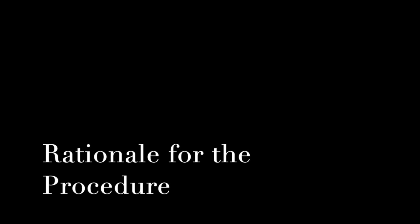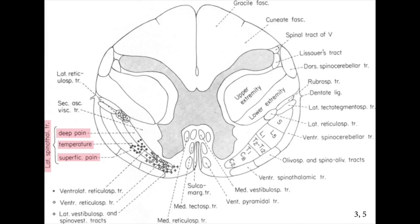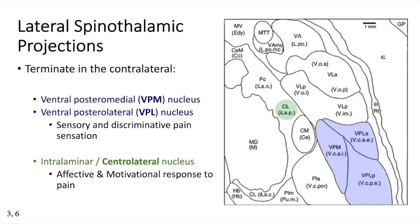The spinothalamic tract transmits nociceptive signals, temperature, and non-discriminative touch from the contralateral side of the body. There is a somatotopic organization of axons within the tract. Fibers entering from rostral and caudal segments are located in the medial and lateral parts of the tract respectively. The spinothalamic tract terminates in the contralateral VPL and VPM nuclei, as well as the intralaminar or central lateral nucleus and posterior complex of the thalamus.